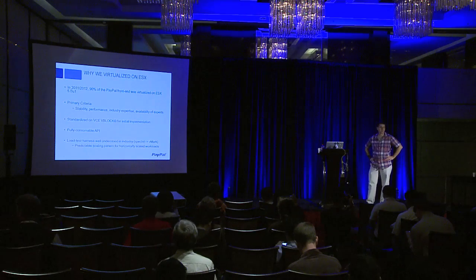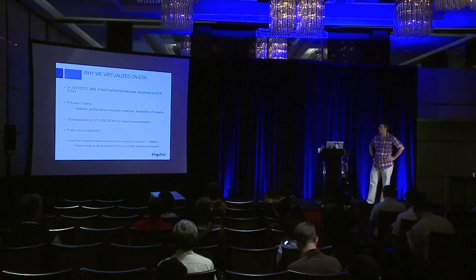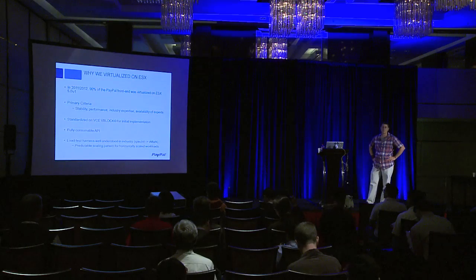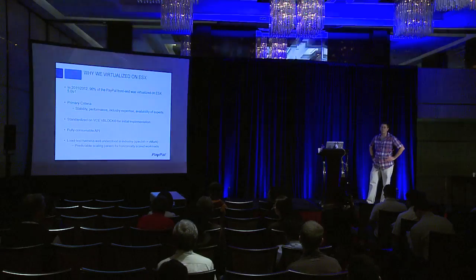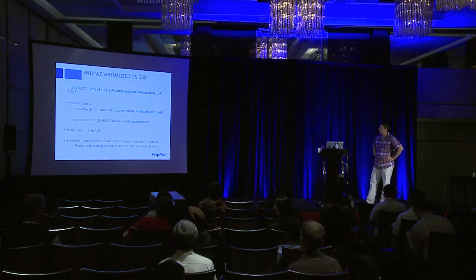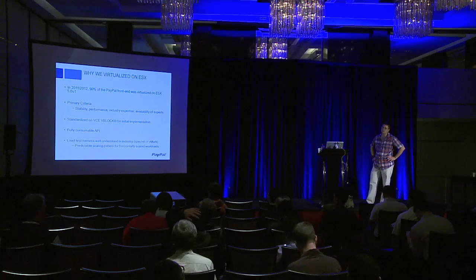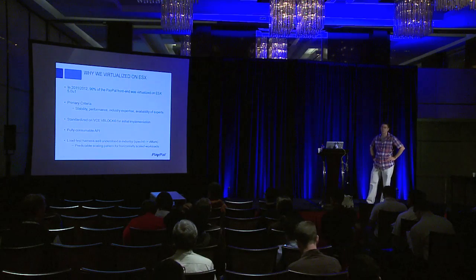We brought in a number of V-blocks across all of our data centers and standardized on that infrastructure for our web tier and mid-tier. Over the next 18 months, I was part of the team that virtualized 90% of the PayPal front-end on ESX, which amounted to roughly 10,000 to 12,000 VMs across three data centers.